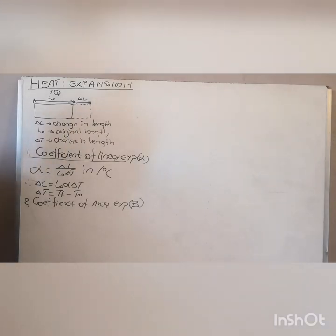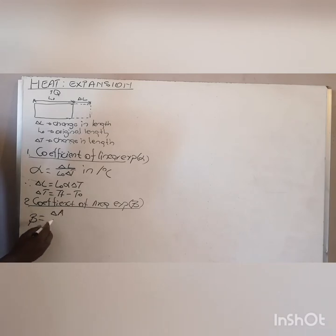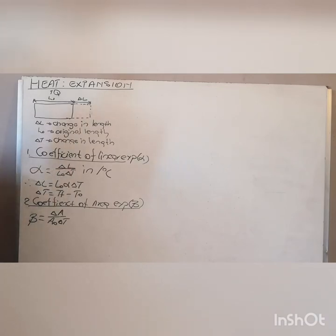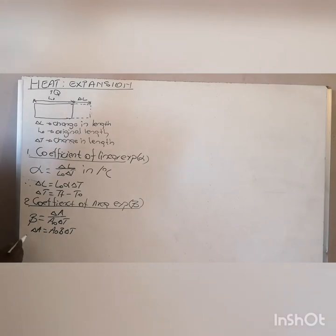Beta is the symbol for the coefficient of area expansion; some books will call it superficial expansion — it is still the coefficient of area expansion. It is defined as the change in area per original area per change in temperature. Remember, your change in area relates to the change in dimensions. So it defines the ratio of your change in area per original area per change in temperature. Making your change in area the subject of the formula gives: change in area = original area × beta × change in temperature. Your change in temperature is still the same.